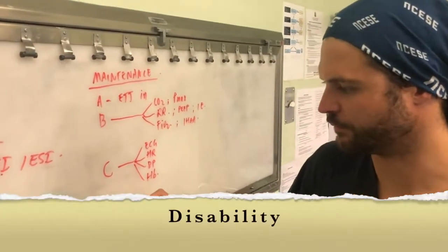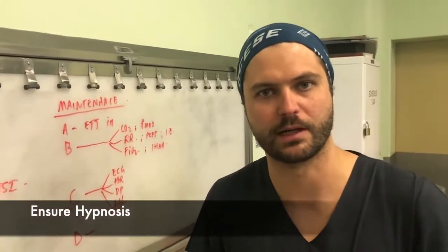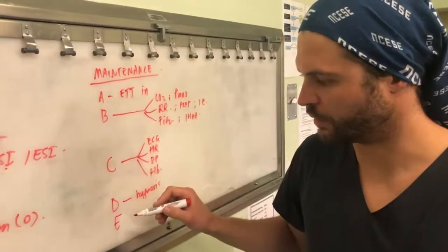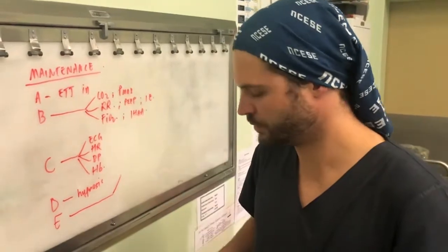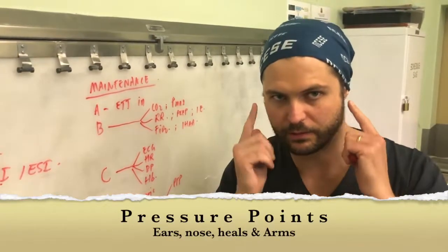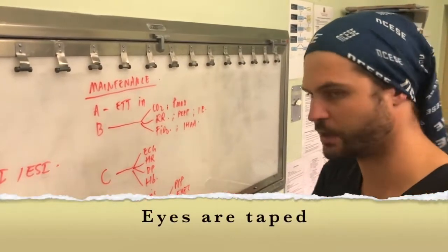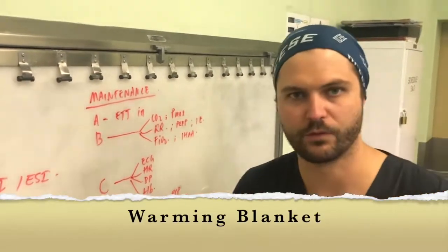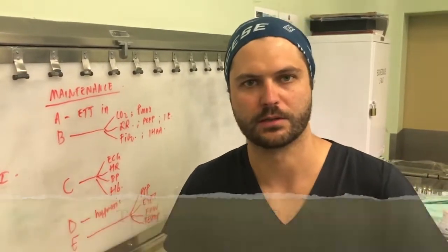Moving on to D — disability. This fits into the triad of anesthesia, and it reminds us that we have given a muscle relaxant and we don't want the patient to be aware, so we want to make sure the patient has sufficient hypnosis on board. E stands for exposure. We want to ensure our patient's pressure points are protected — specifically ears, nose, heels, and arms. We want to make sure the patient's eyes are taped so they don't get damaged during the anesthetic. We also ensure the patient has a forced air warmer to keep them warm, and a temperature probe to monitor temperature intraoperatively.